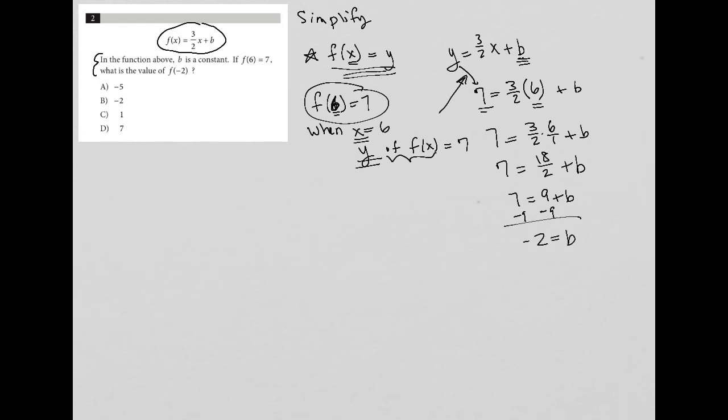Which means I can rewrite my function. I'll go over here where I have more space. I have f(x) is equal to three halves x minus two, because I just figured out that b is equal to negative two. That's the usefulness of that statement. Notice how I'm not continuing to read the question until I extract all the information from what's given to me.